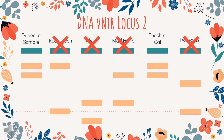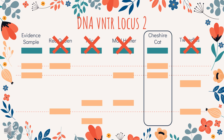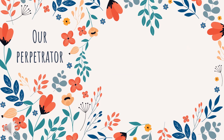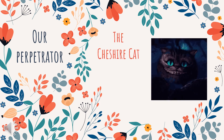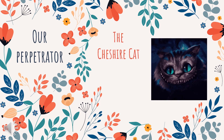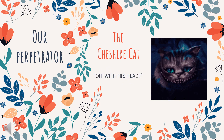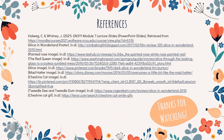What this leaves us with is the Cheshire Cat, whose bands are a perfect match to the sample taken from the paintbrush. Taking the results of our DNA VNTR analysis, the evidence found at the scene of the crime, and the motive that the guilty party is quite the trickster, we can confidently say that the Cheshire Cat is the one who painted the Queen's white roses red. As it's said for all those who commit a crime against the Queen — off with his head! Thank you for watching, and I hope this video made you curiouser and curiouser about the topics of genetics.